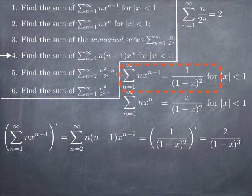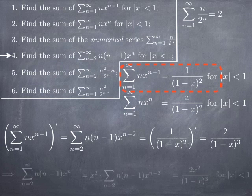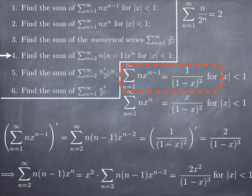That gives us the series where the power of x is n minus 2. To get power n, we multiply by x². This is a constant with respect to the series index, so x² times the series from 2 to infinity of n(n-1)·x^(n-2) gives us the series we want. Therefore the sum of the series from 2 to infinity of n(n-1)·x^n equals 2x² over (1 minus x)³, valid for |x| < 1.